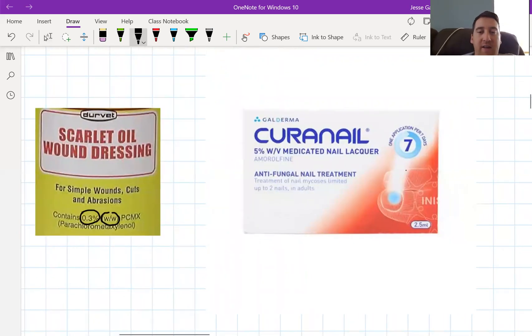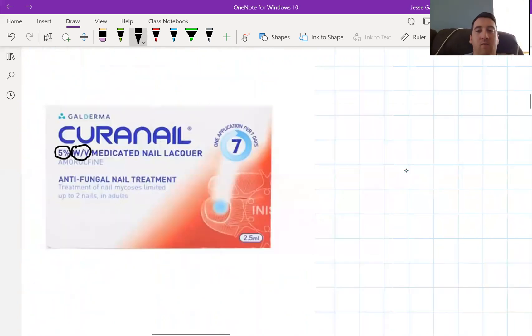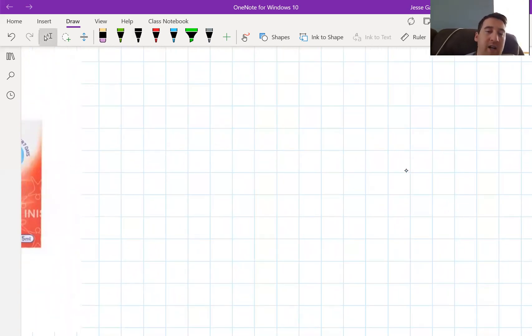If we look at this toenail infection treatment, this is 5 percent and it's W per V this time, or W/V. So what exactly does this mean? Let's think about the word percent and what that means.